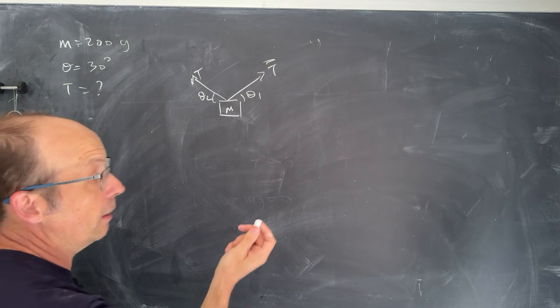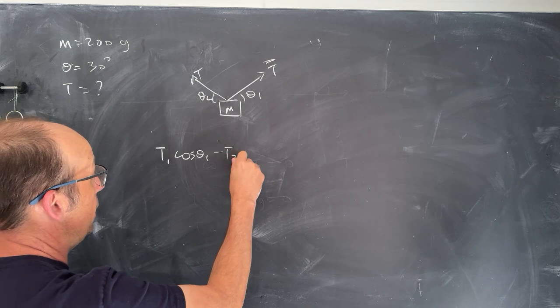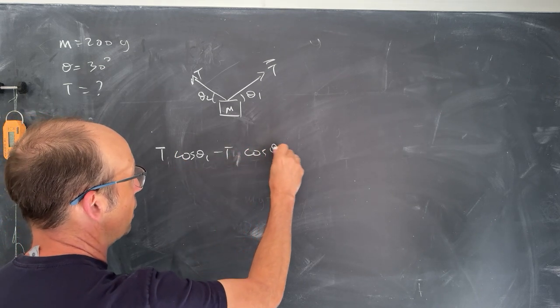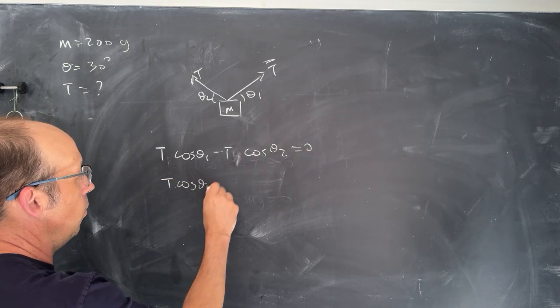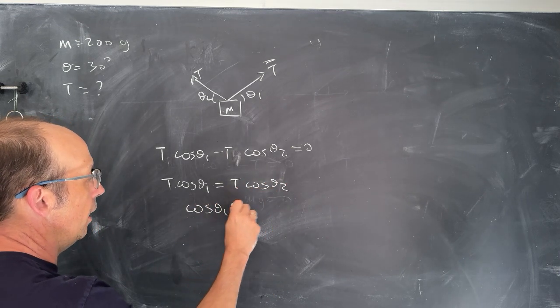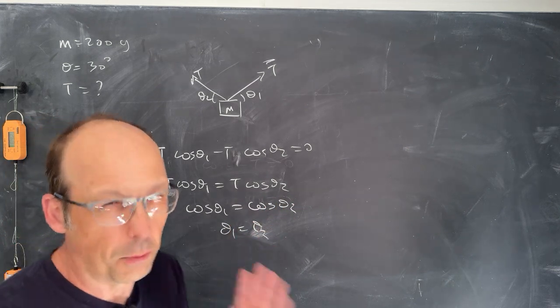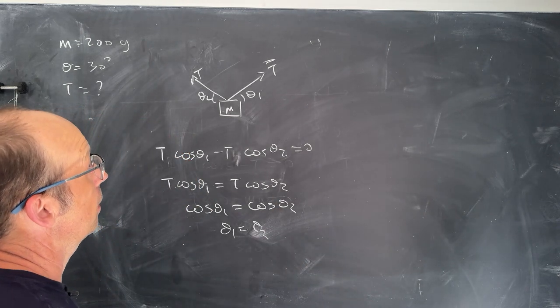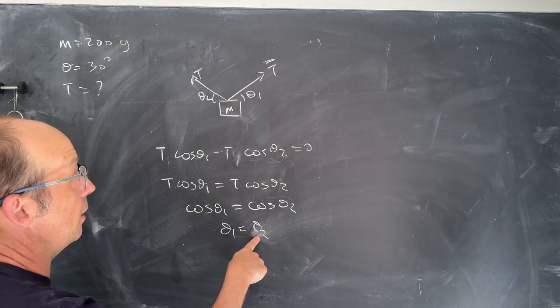So I'm going to go ahead and write my net force in the x direction. I get t1 cosine theta 1 minus t2 cosine theta 2 equals zero. So right there you can see that t cosine theta 1 equals t cosine theta 2. So cosine theta 1 is cosine theta 2, and so theta 1 is theta 2 for normal values of theta. Now you can go around, you can add pi, and you'd get the same thing, but obviously that's not going to work.